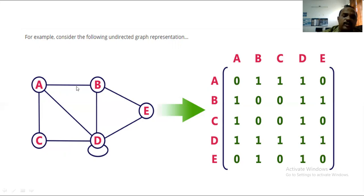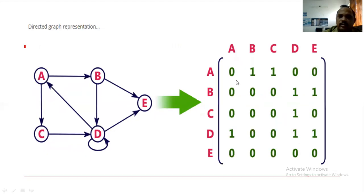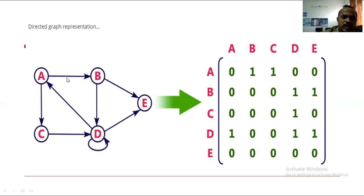Building the adjacency matrix for the directed graph: Row A — A to A is 0, A to B is 1, A to C is 1, A to D is 0 (incoming only, no outgoing), A to E is 0. Row B — B to C is 0, B to D is 1, B to E is 1. Row C — C to A is 0, C to B is 0, C to C is 0, C to D is 1, C to E is 0.